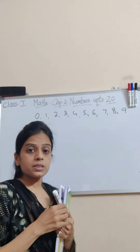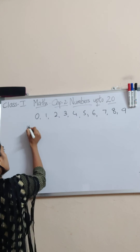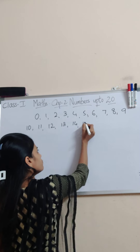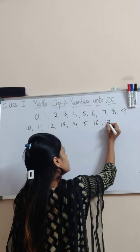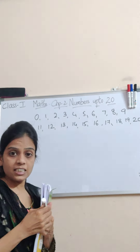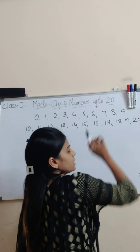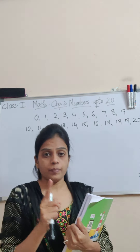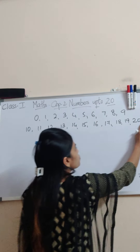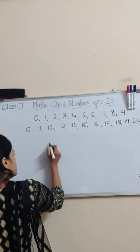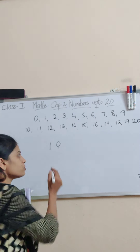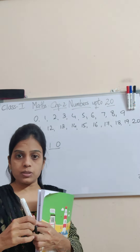Now we are learning the numbers up to 20 — that means from 10, 11, 12, 13, 14, 15, 16, 17, 18, 19, and 20. As you can see, when we learned numbers up to 9, they were single digit numbers. Now when we write 10, there are 2 digits — this is 1 digit and this is another digit. So these are called 2-digit numbers.